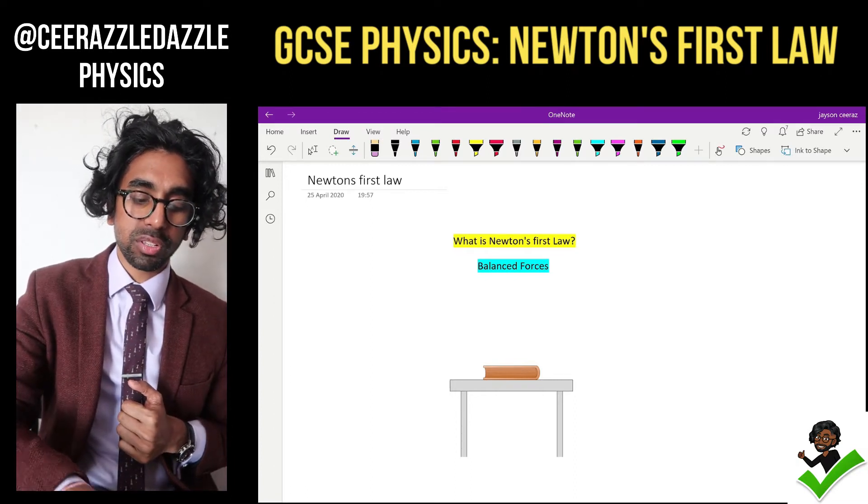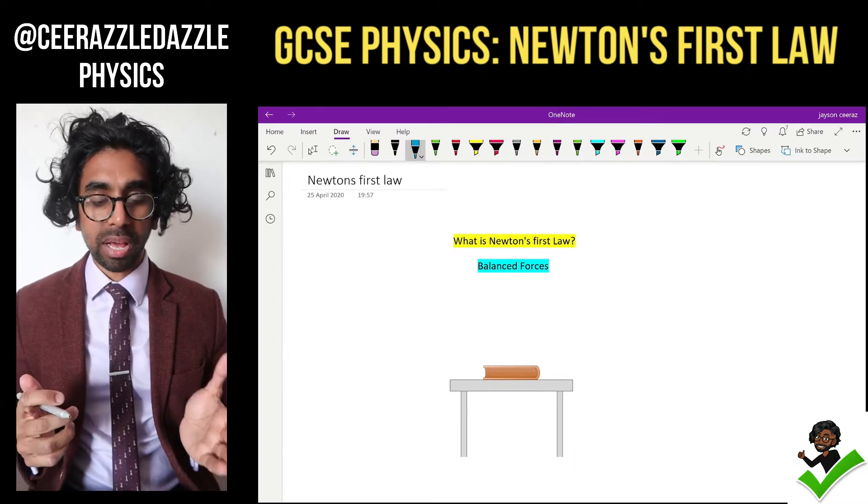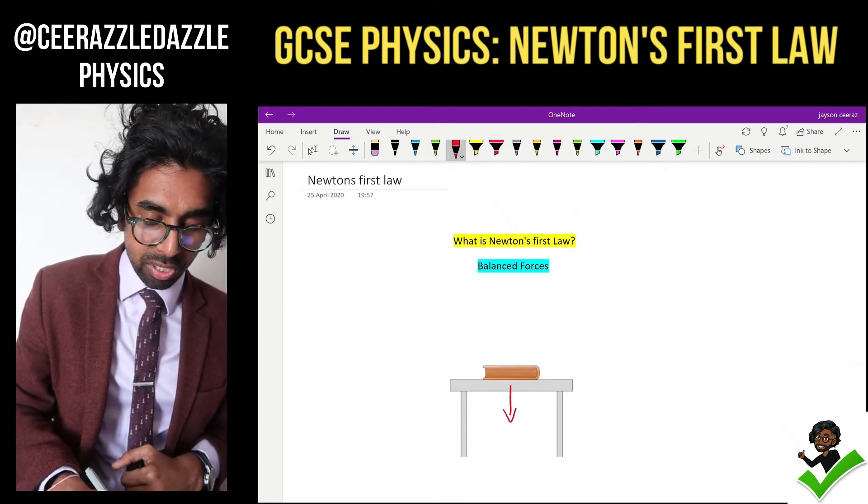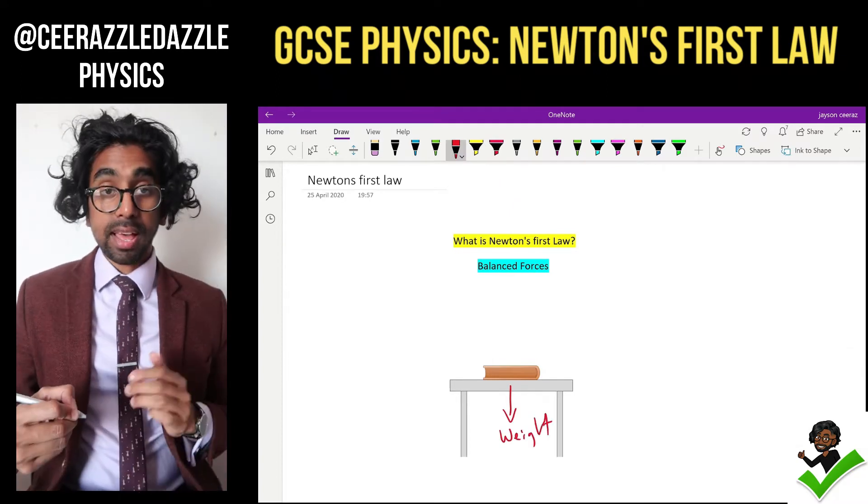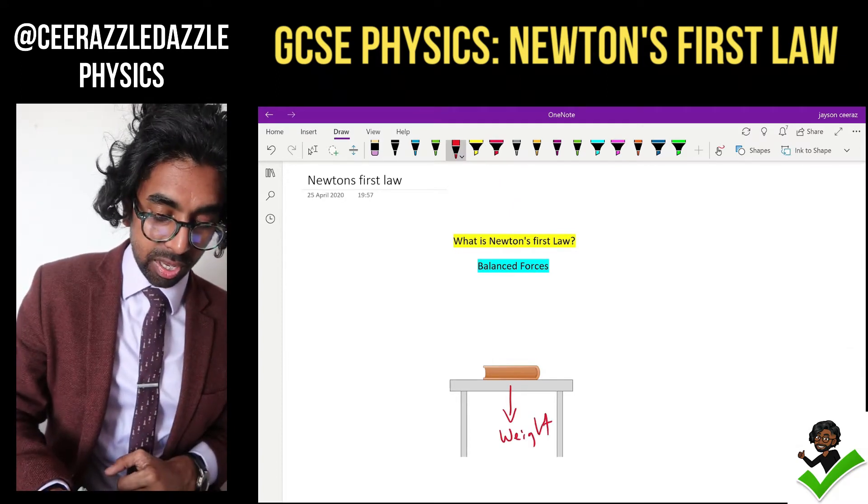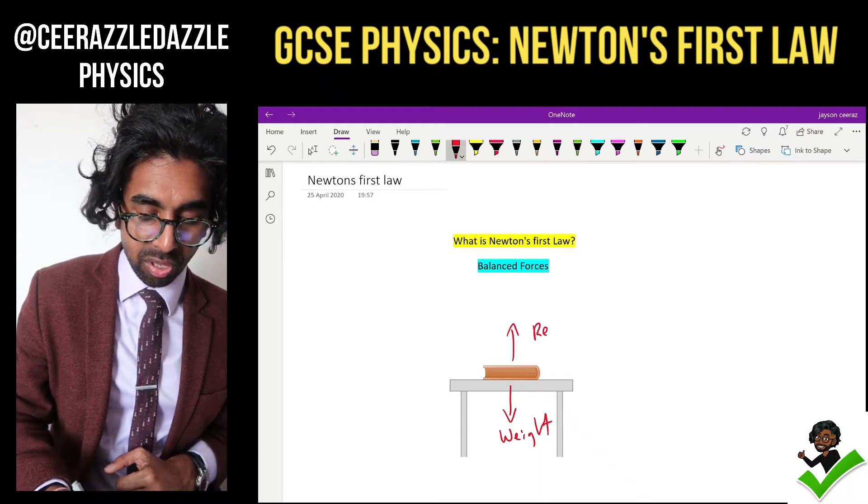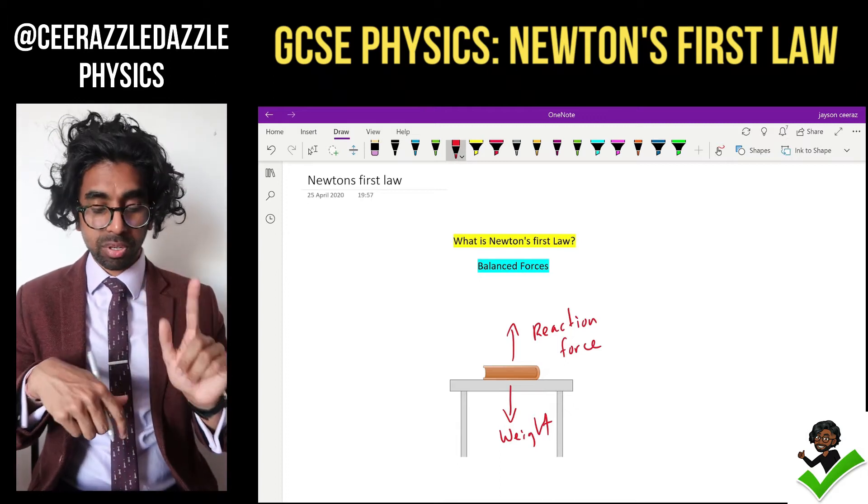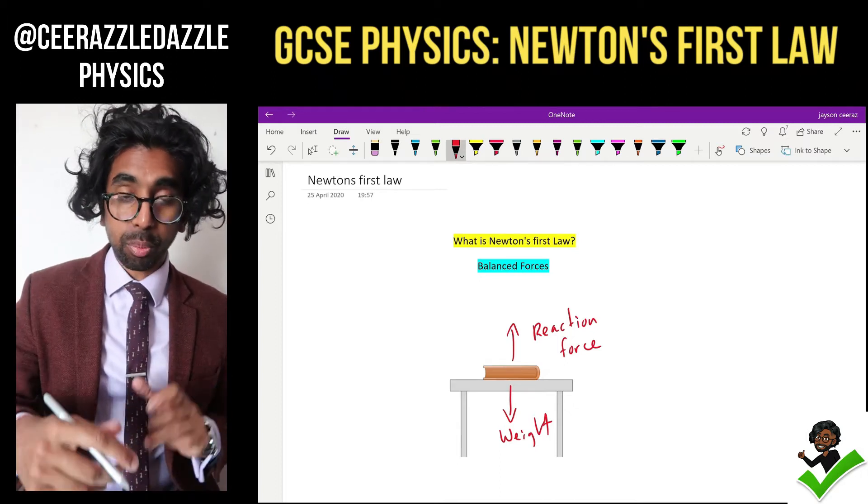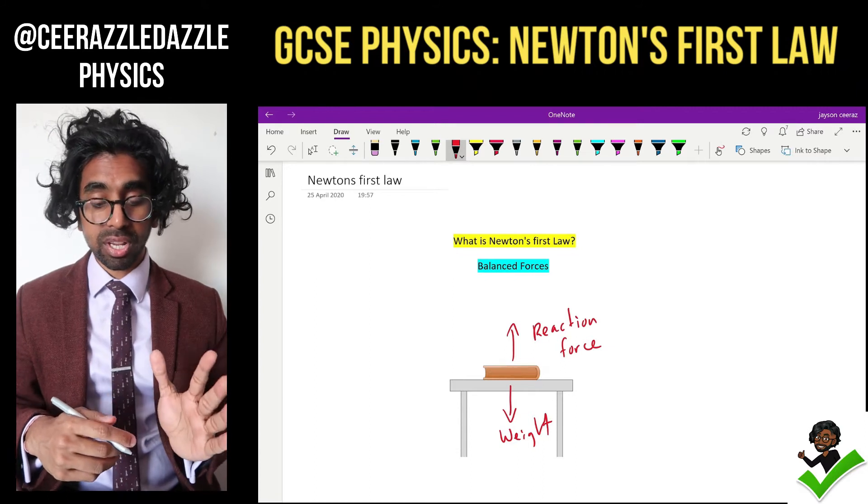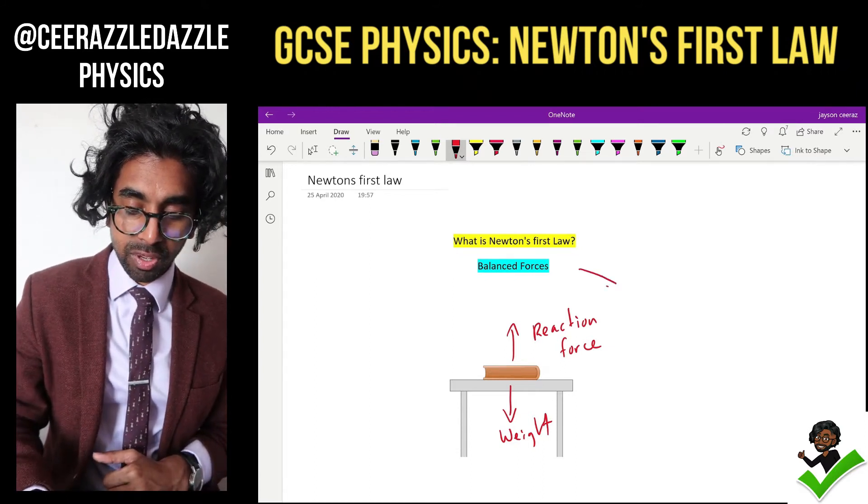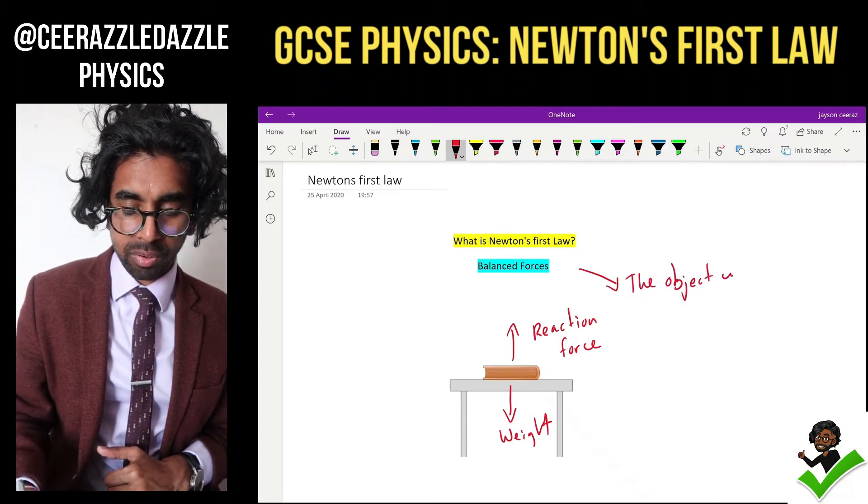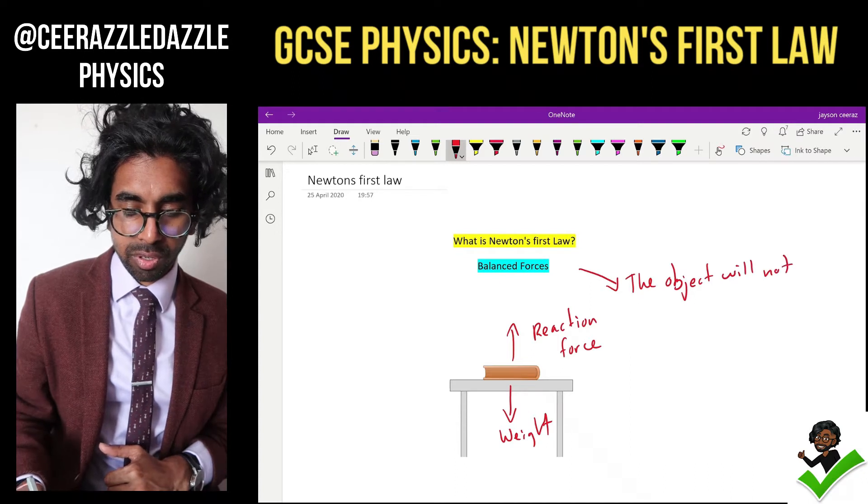So before we start talking about Newton's first law, let's talk about when forces are balanced. In this diagram here I've got a book on a table. We know that the weight is pushing down here, and there's another force pushing up equally - this is going to be the reaction force. We can see that both the forces are balanced because both the arrows are the same size. Therefore, when the forces are balanced upon an object, we know it will not move.